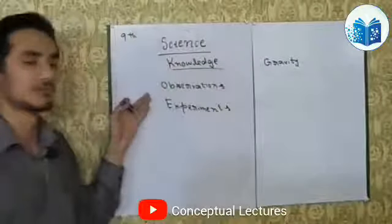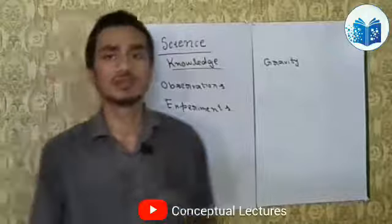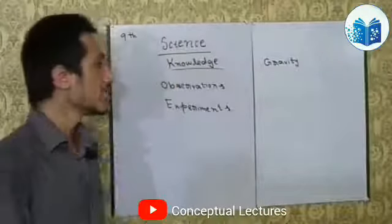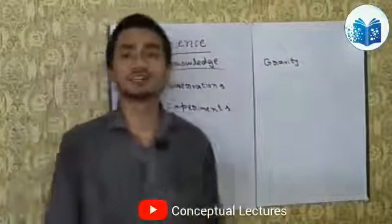Knowledge obtained through observations and experiments is called science. This is the definition we're discussing.